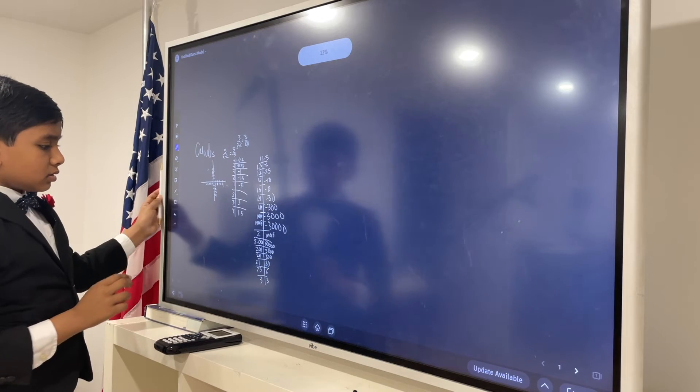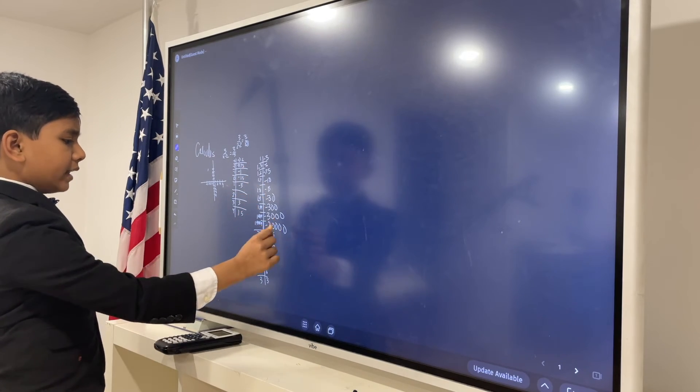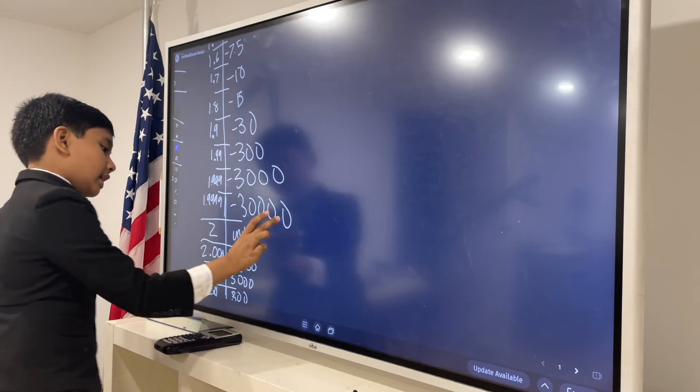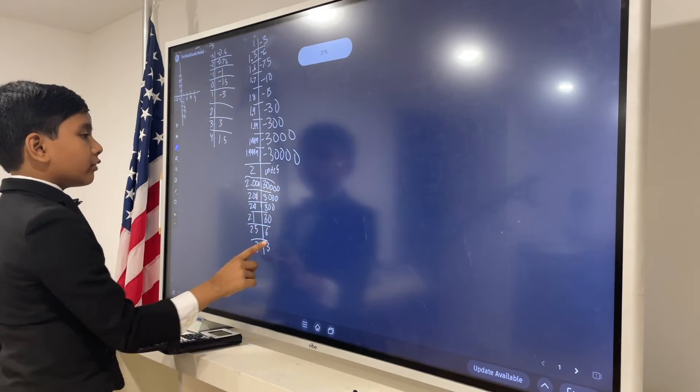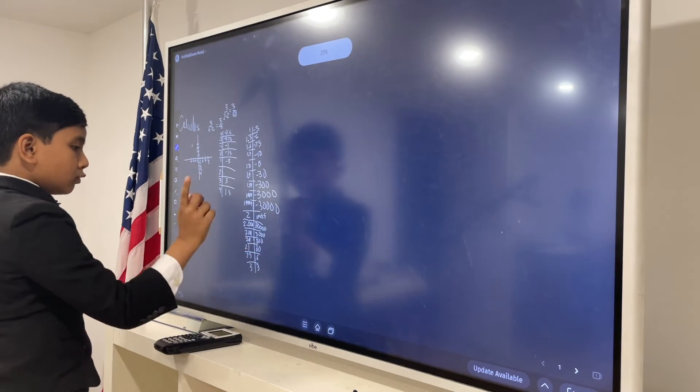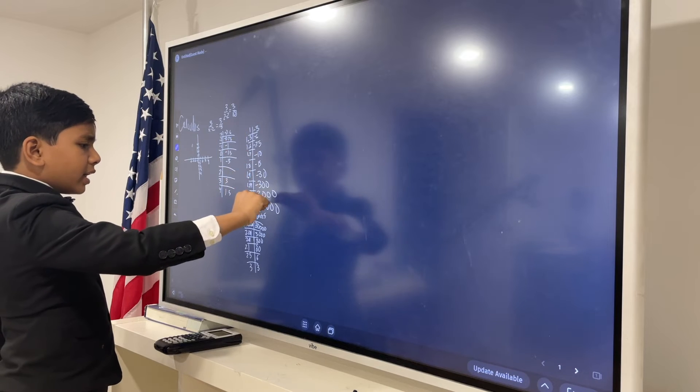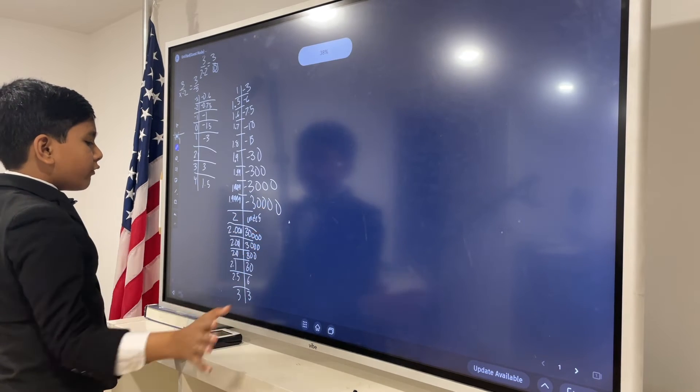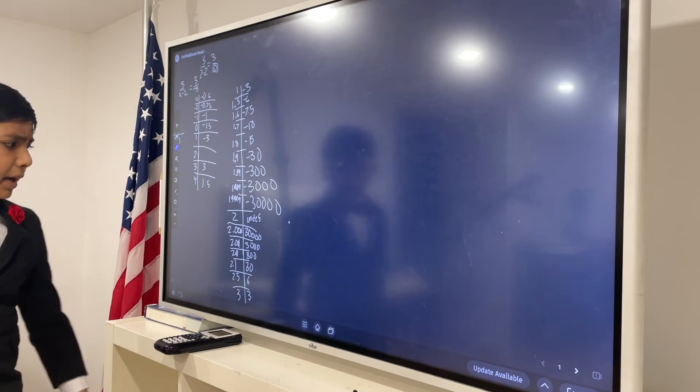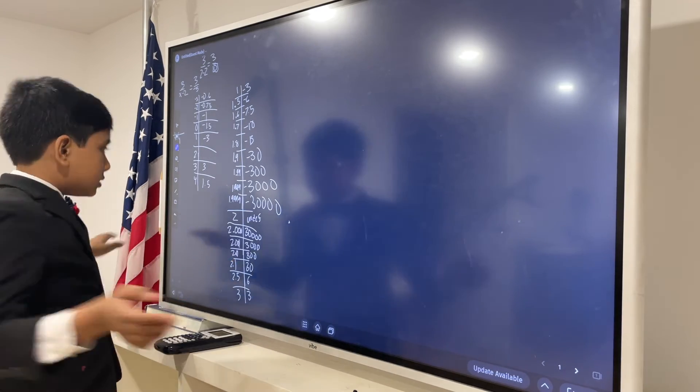So 2.001 minus 2 is 3,000. 3 over 2.01 minus 2 is 300. 3 over 2.1 minus 2 is 30. 3 over 2.5 minus 2 is going to be 6. And now this one, just 3. It seems to get really big and then zoom out, and then start to get really small. From really, really, really small and then undefined to really, really, really big also and then getting really small again.